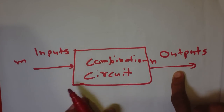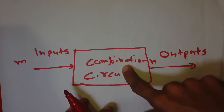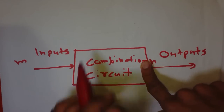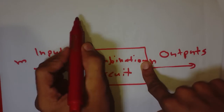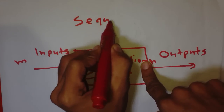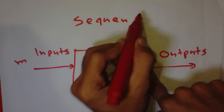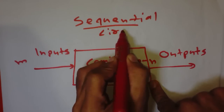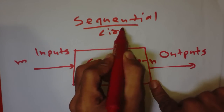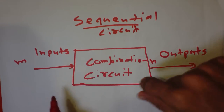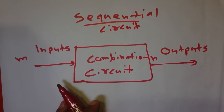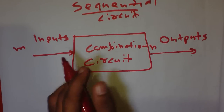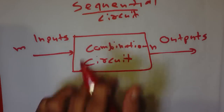This is the type of combinational circuit. But a flip-flop is not a combinational circuit — it is a sequential circuit. A sequential circuit has one special memory element attached to its circuit.